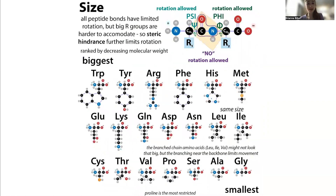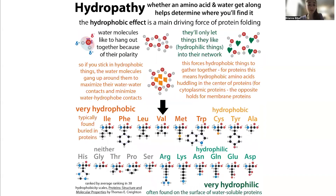So that is the basics of valine. It's one of the smaller ones, but because it's got that branch close to its backbone, it's going to restrict motion and movement. One of the main features of it is it's going to be very hydrophobic — it's just got this hydrocarbon chain, hydrogens and carbons.